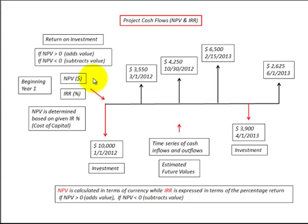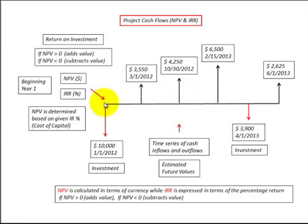In this presentation, we're going to calculate the net present value and internal rate of return on a time series of cash inflows and outflows. On the bottom here are the outflows and here are the inflows. We're going to discount these flows all back to beginning of year one, based on an interest rate percent — like the cost of capital. If we know our cost of capital or interest rate percent, we can discount the net present value using that percentage.